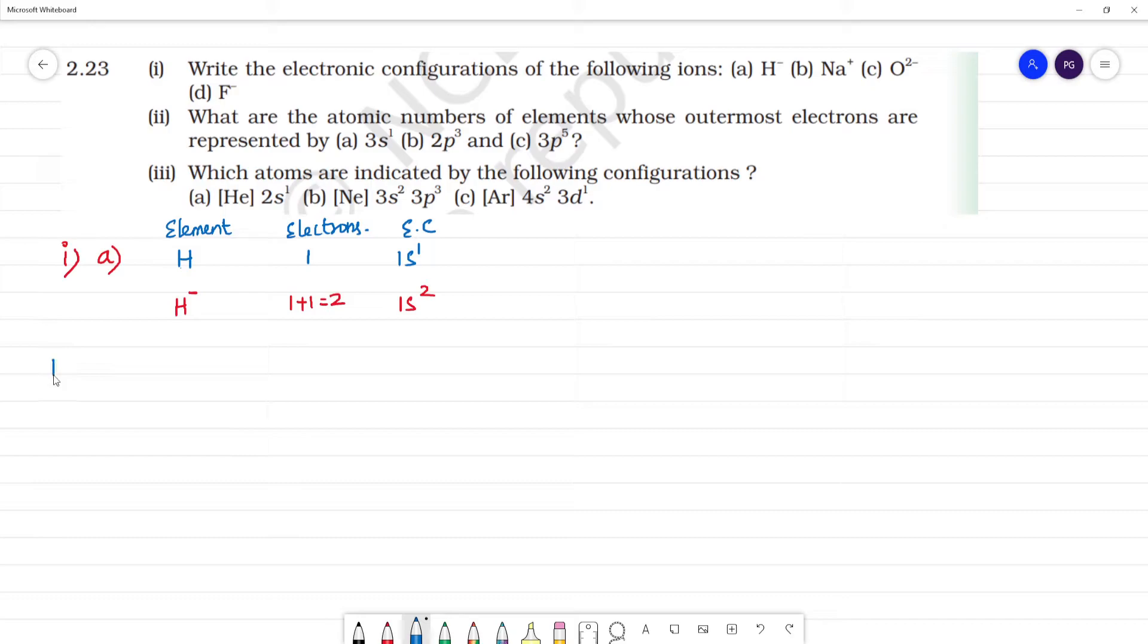Next element is Na plus. Sodium has 11 electrons with electronic configuration 1s2 2s2 2p6 3s1. Na plus means one electron is lost, so number of electrons is 10 and the electronic configuration is 1s2 2s2 2p6.